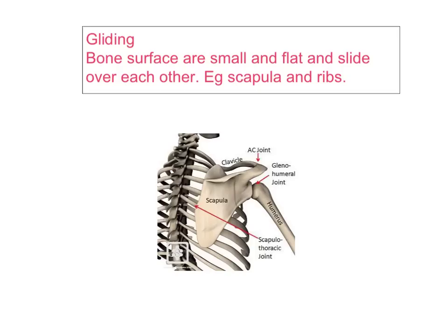The gliding joint is where the bone surfaces are small and flat and slide over each other. For example, the scapula and the ribs. The ribs lie underneath the scapula and the scapula just moves back and forth over the ribs.